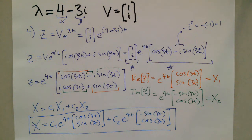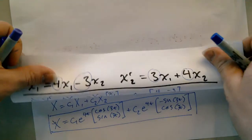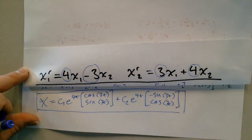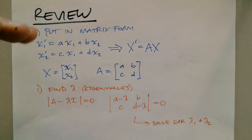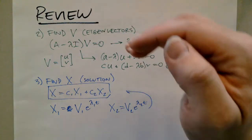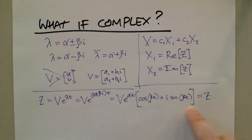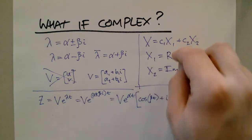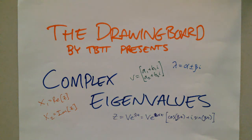Going back to the original problem, this is the final solution vector for that system. To summarize, we covered how to handle complex eigenvalues: start with matrix form, find eigenvalues, find eigenvectors, then find the Z vector and split it into its real and imaginary components to plug into the solution vector capital X. This has been The Drawing Board by Tabata Pai. Thank you for watching.